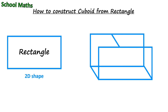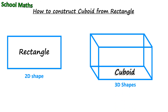Observe the movements carefully. A cuboid is obtained after joining 2 rectangles using 4 lines. Cuboid is a 3D shape.